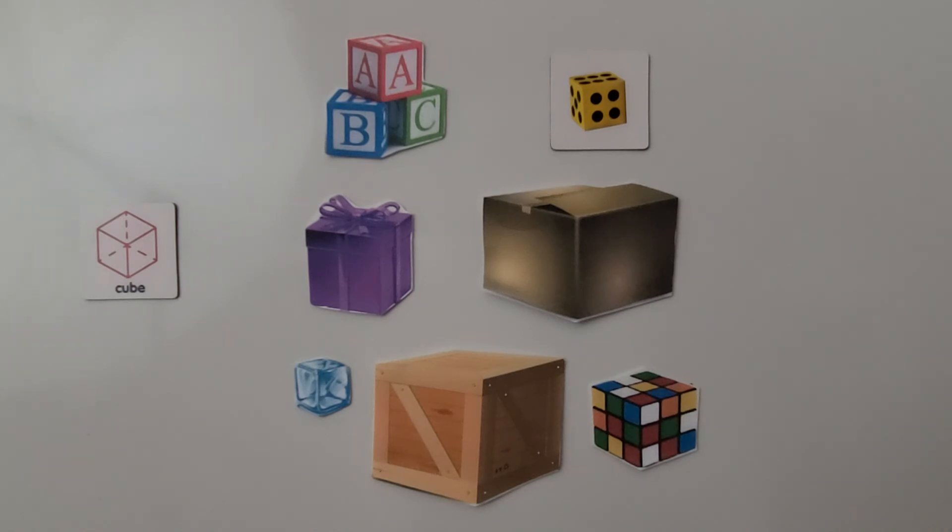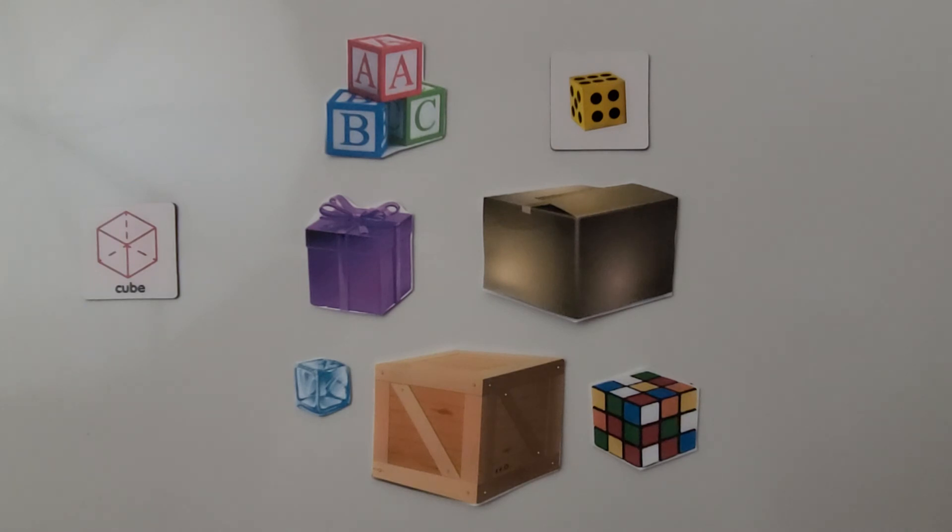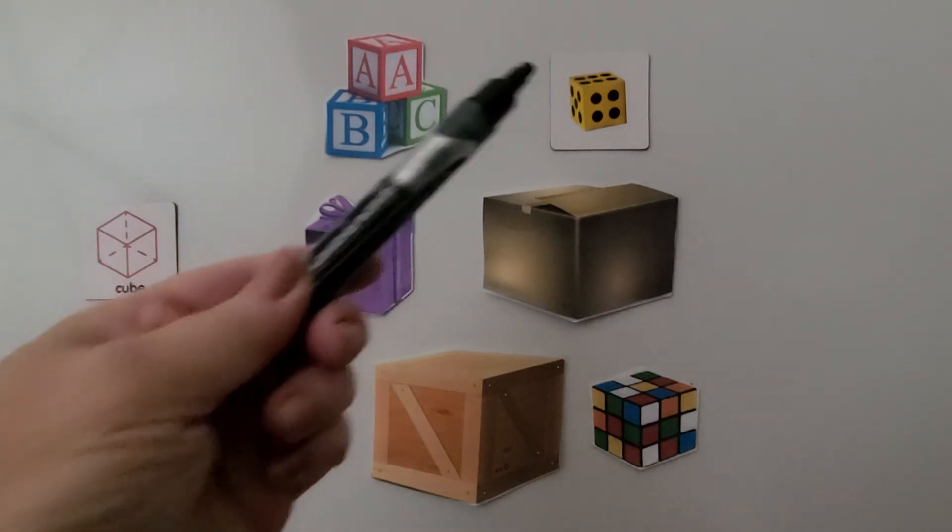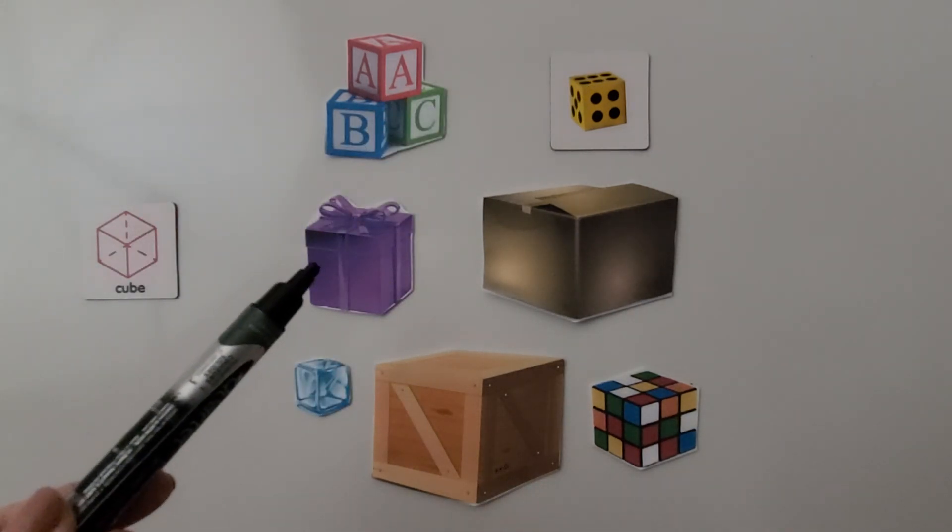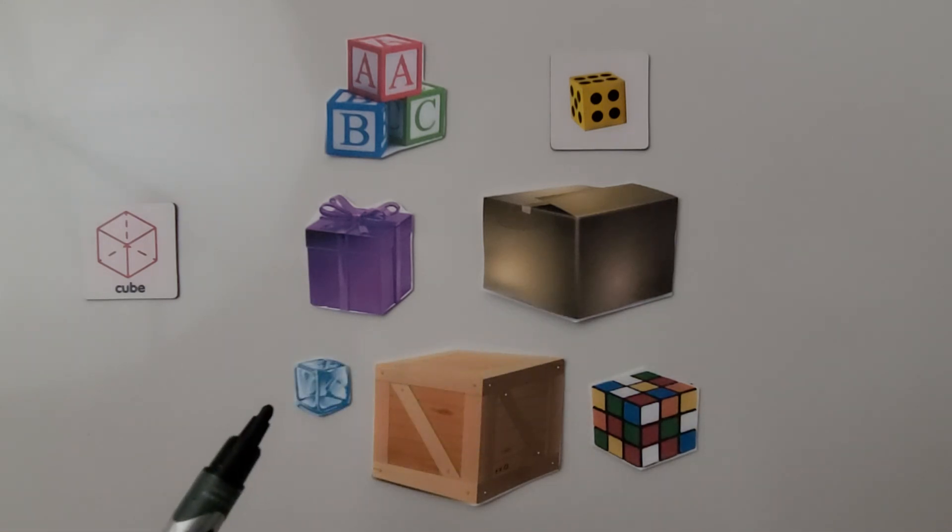There are cubes all around us. Alphabet blocks. Number cubes for games. Gift boxes. Cardboard boxes. Ice cubes. Wooden crates. Even a Rubik's cube. They have six sides that are all the same size. And all the sides are squares.